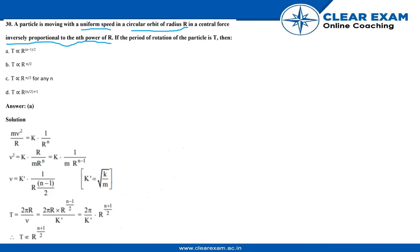If the period of rotation of the particle is T, then let's see. We start with mv squared by r equal to k into 1 upon r raised to power n. This equation, this condition is given by the question. Now let's proceed.